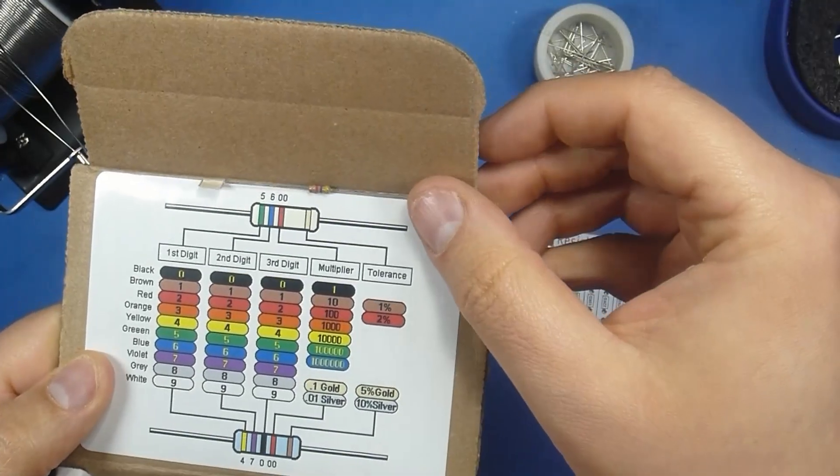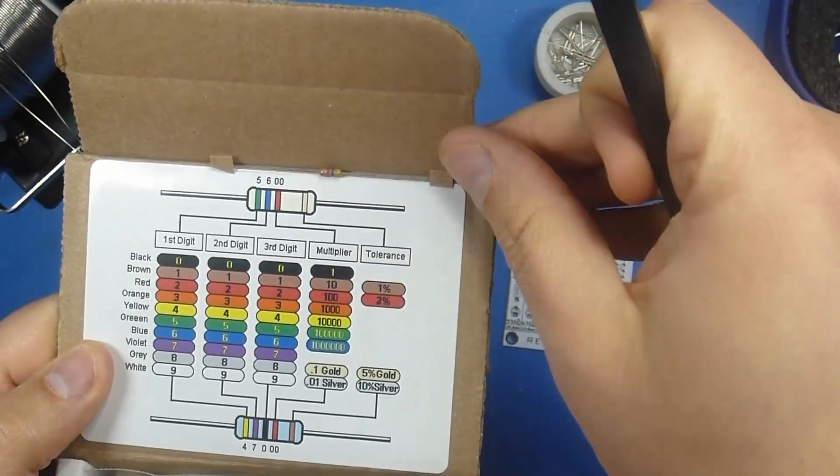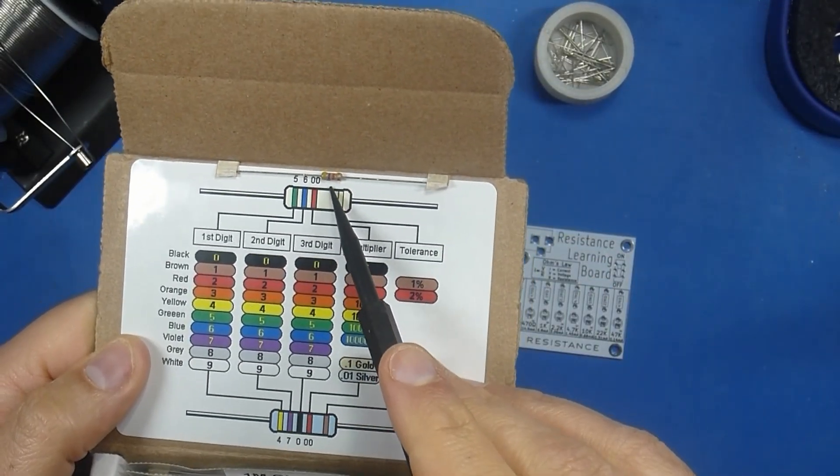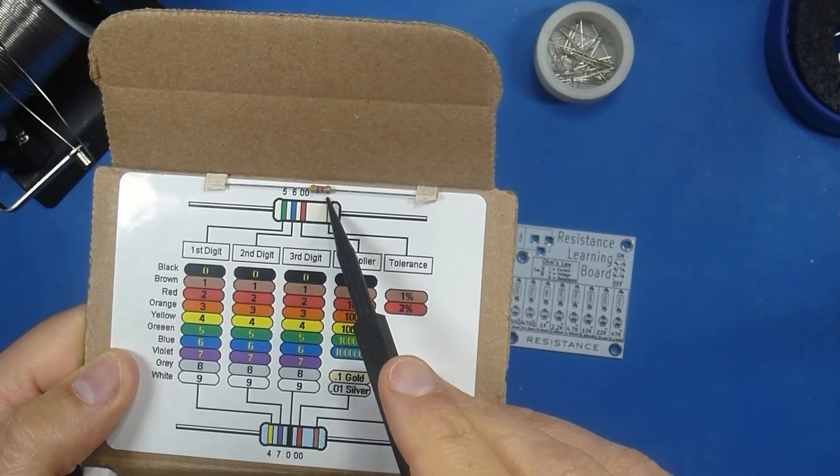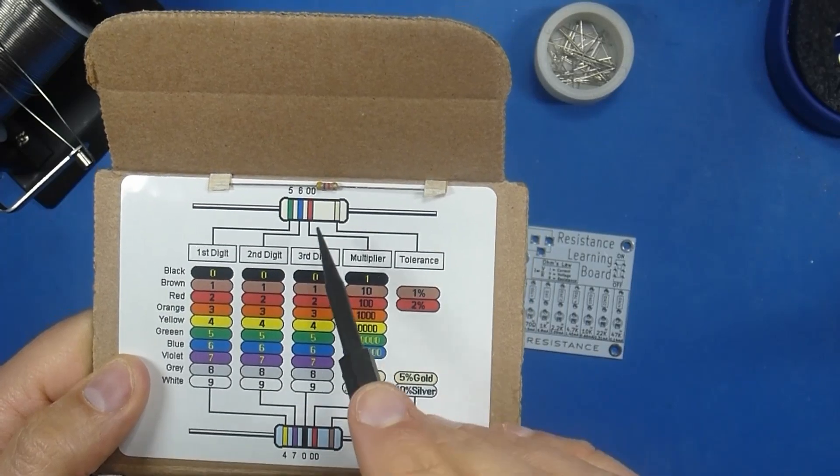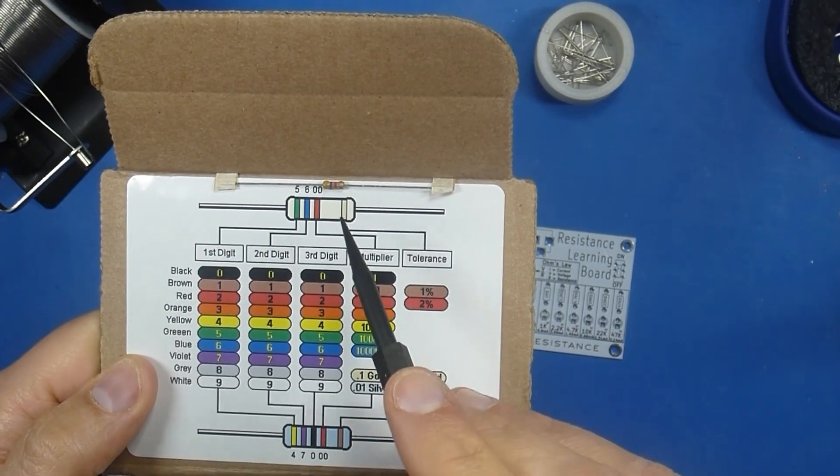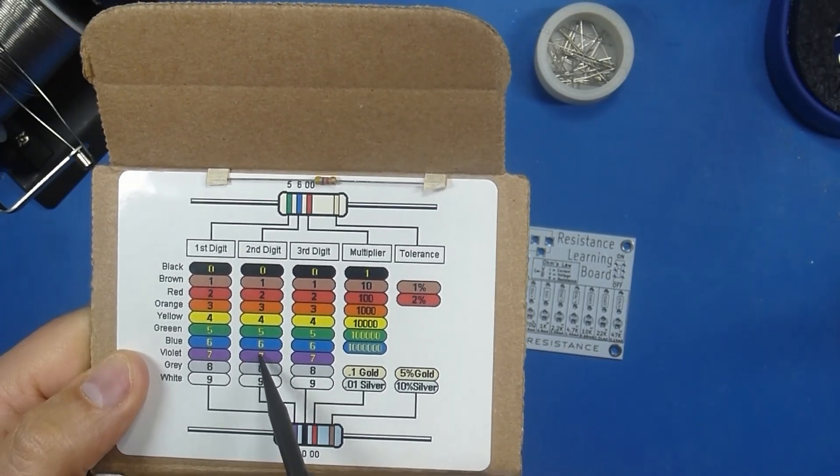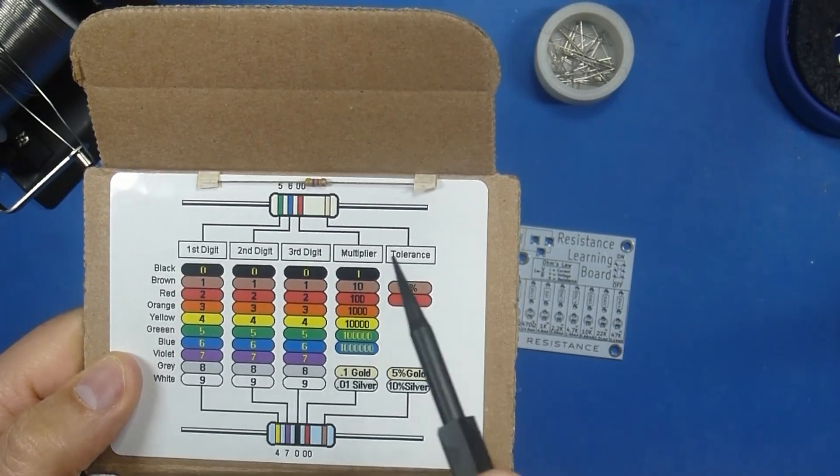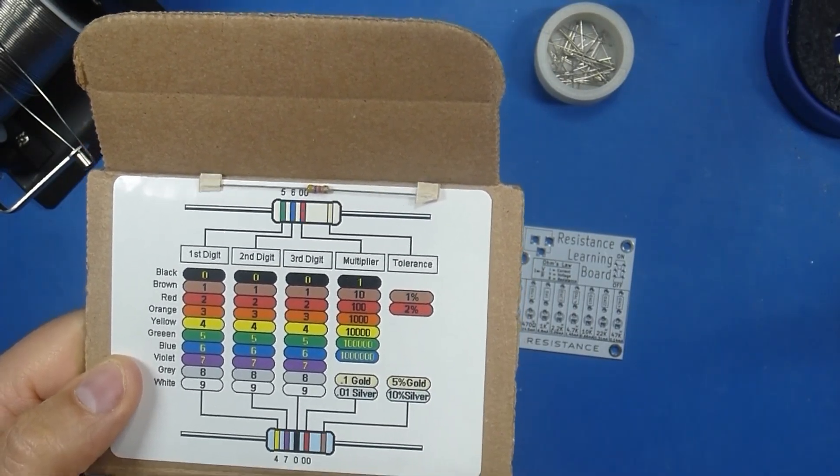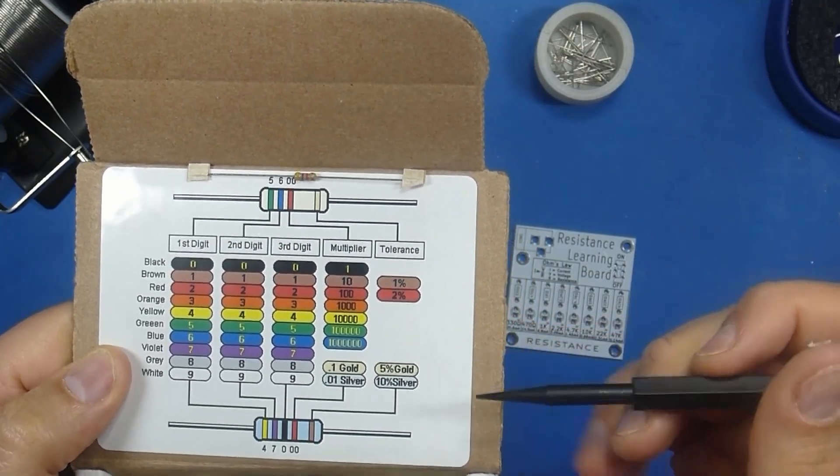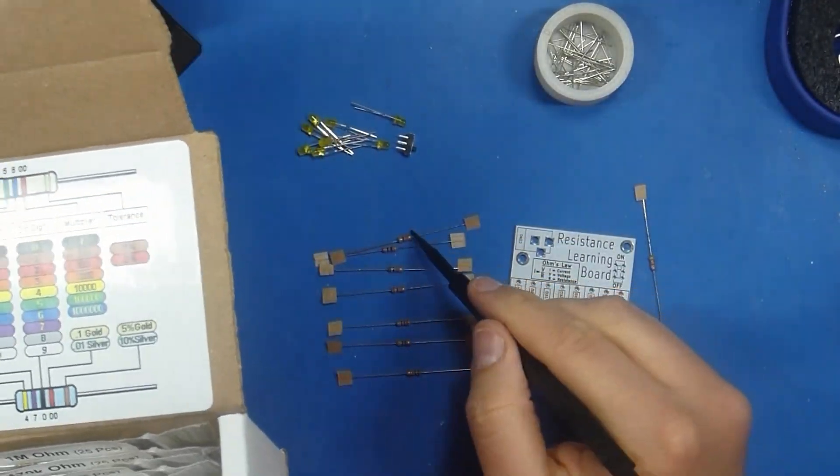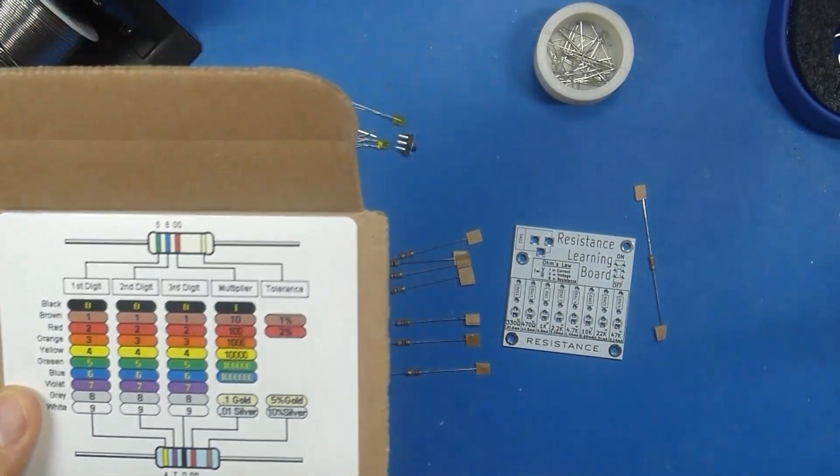So we're going to grab a resistor, and we'll look at the first value of the band. We've got yellow, purple, red, and then gold. So yellow is a 4, purple is a 7, red is going to be a 100 times multiplier. So 47 times 100 gives us 4.7k, or 4,700 ohms. The gold refers to the tolerance. So with gold, it means we have 5%, which means that we're going to be within 5% of that value. Which is good enough for our purposes.